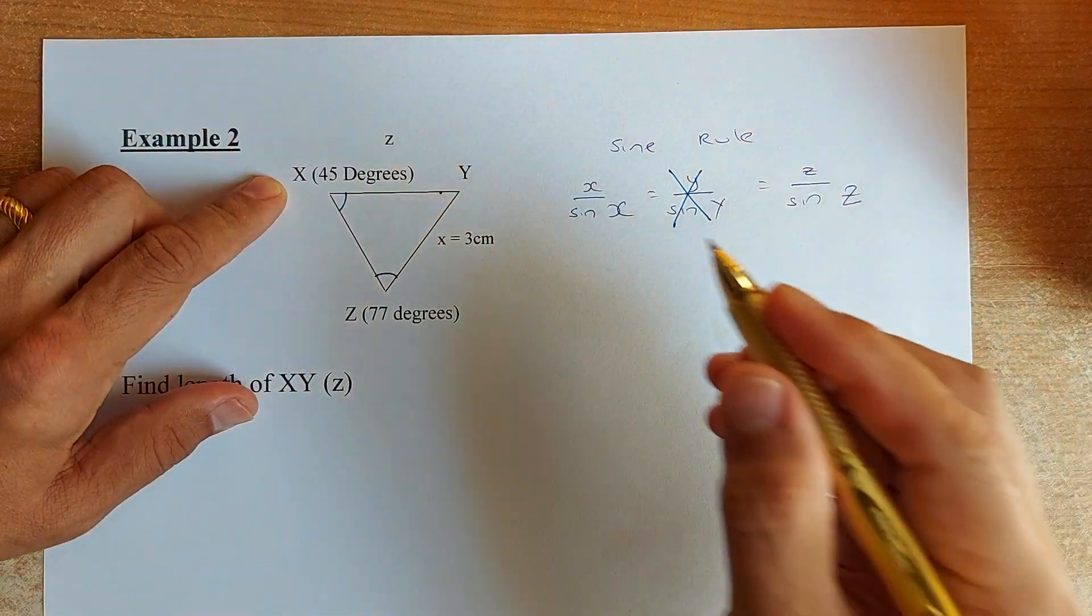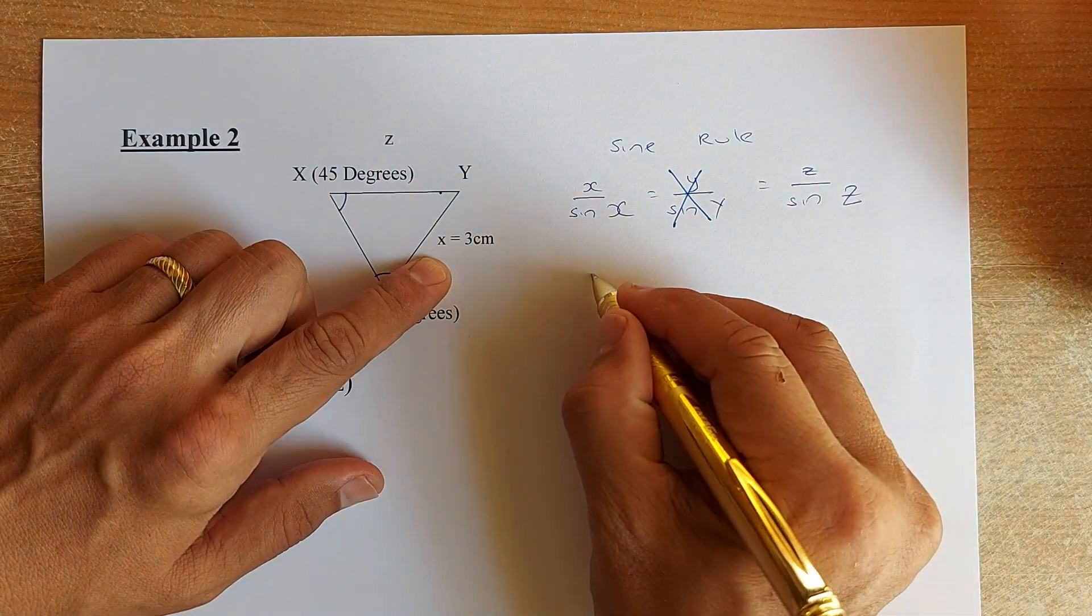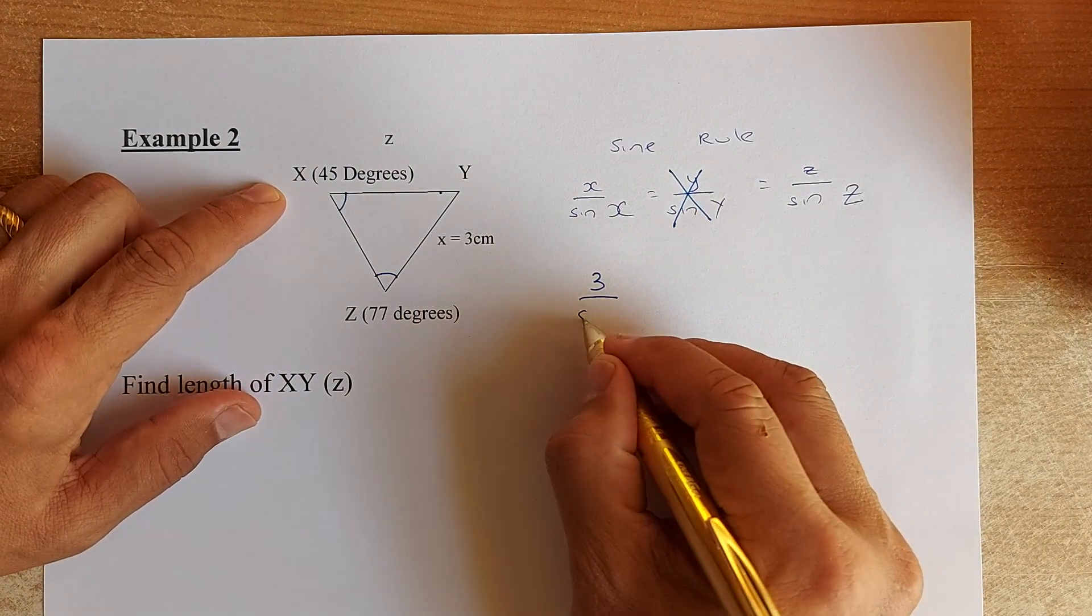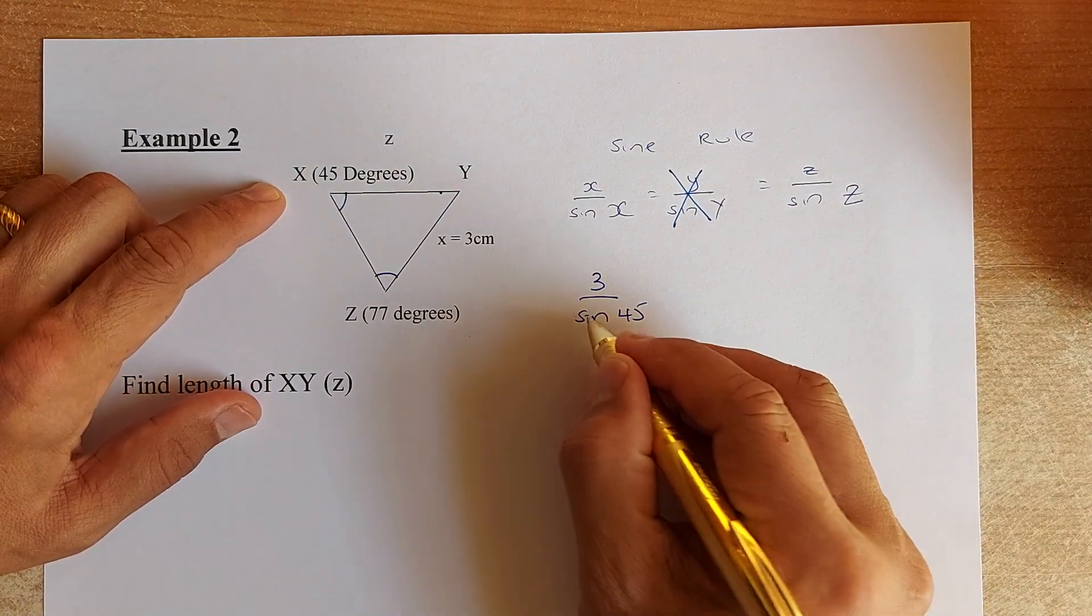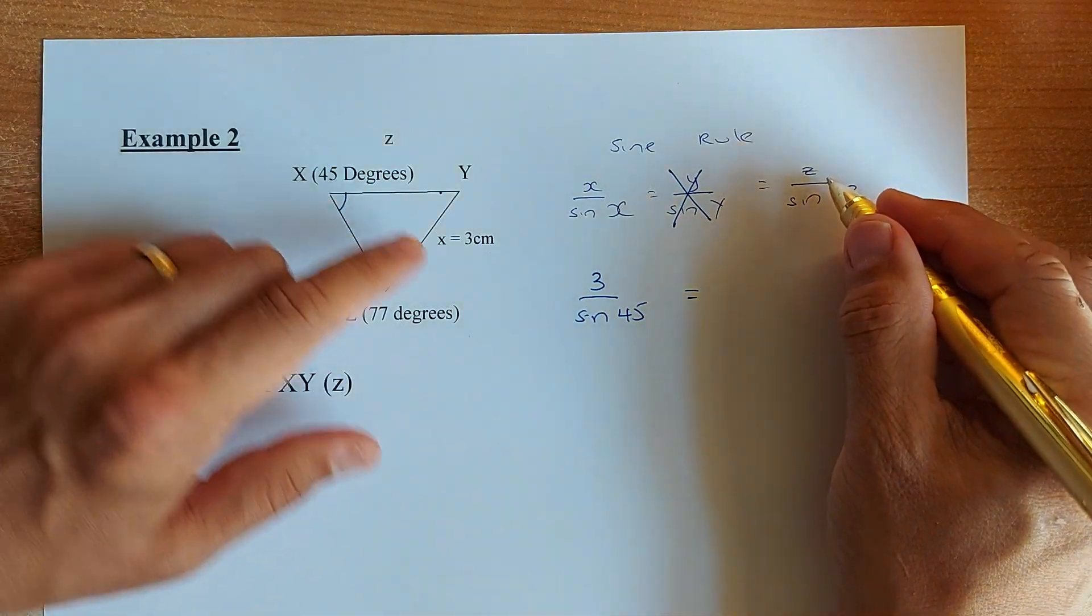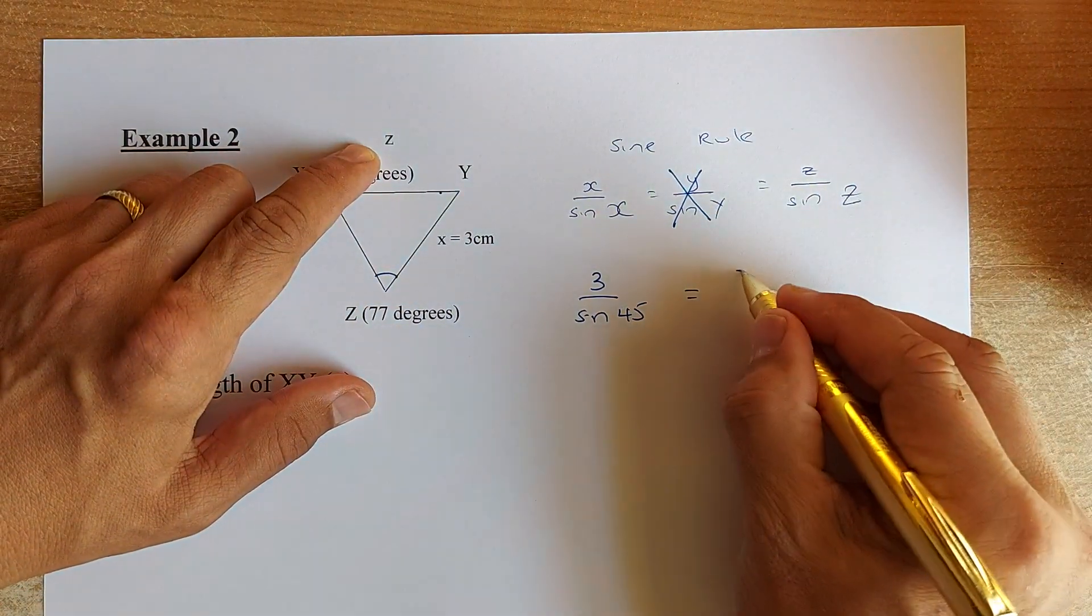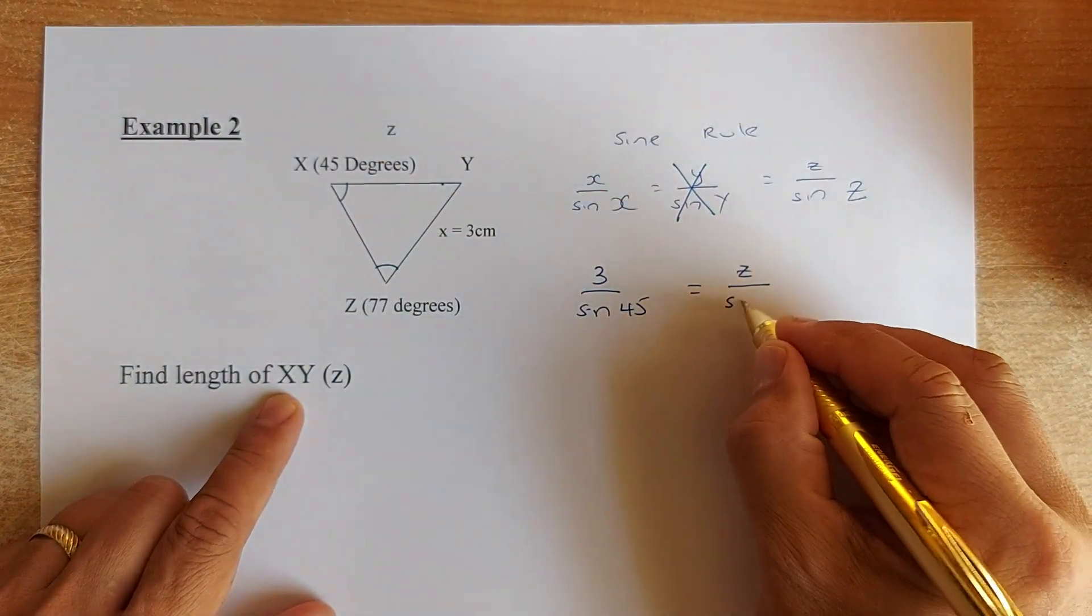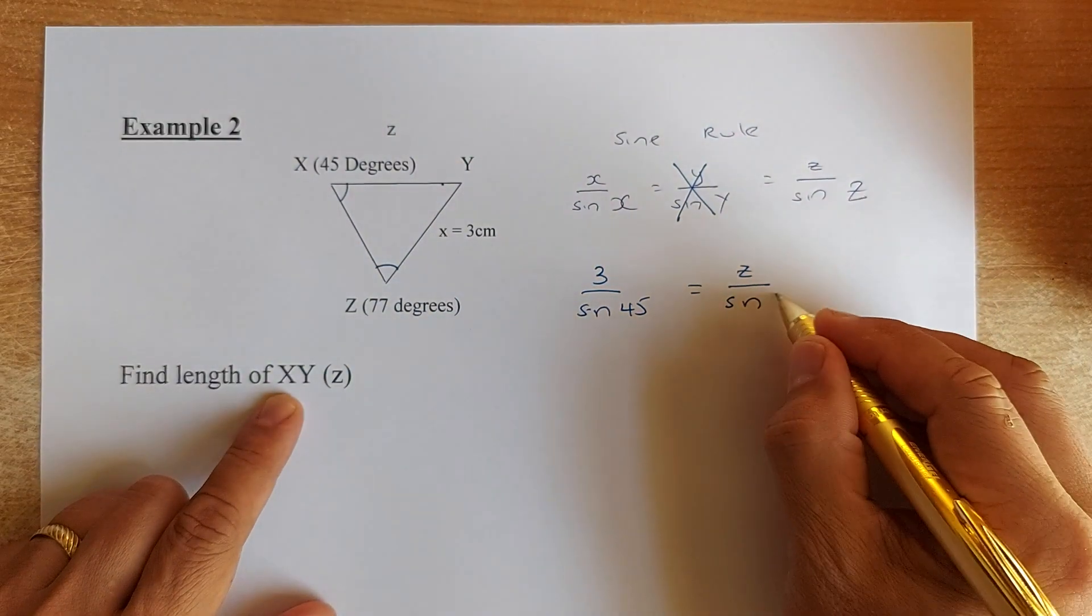We are going to be, now X is going to be 3. The side of X is 3, sin(45). And then, that's X equals to Z. Z is the side. That's what we are going to find. Z, because we are going to find the length of XY, which is Z, over sin(77).